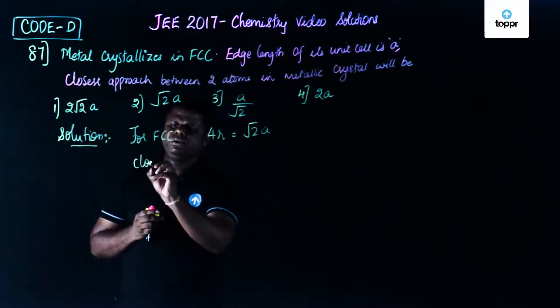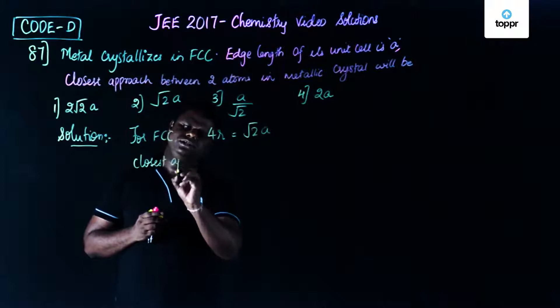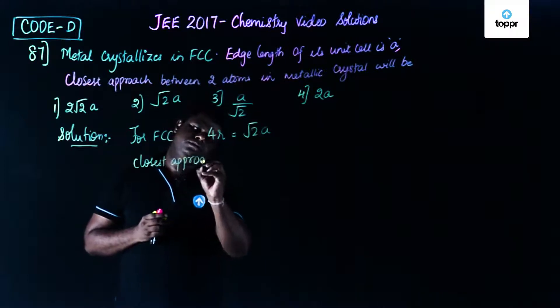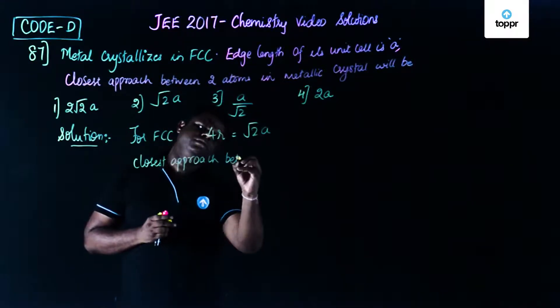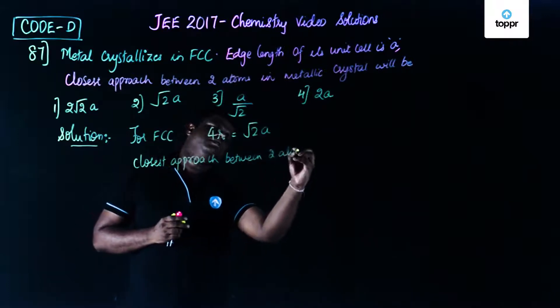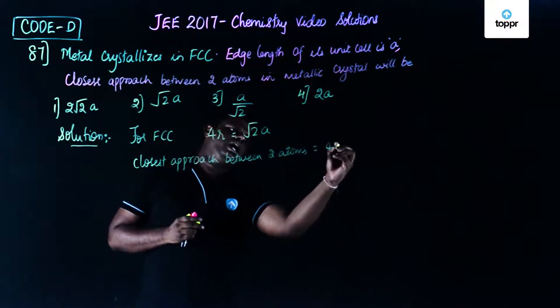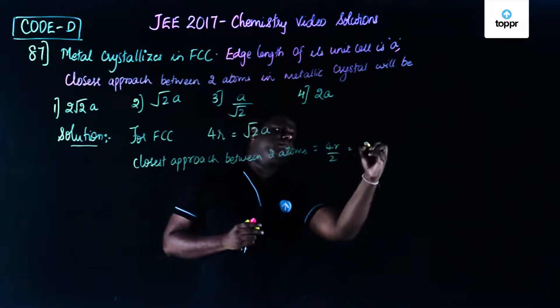The closest approach between two atoms is given by 4r by 2, which is nothing but 2r.